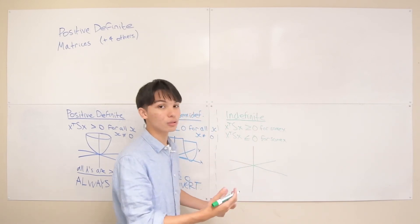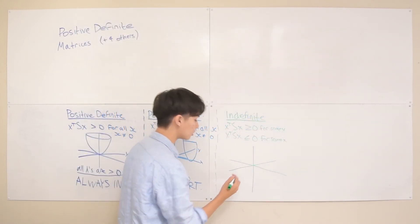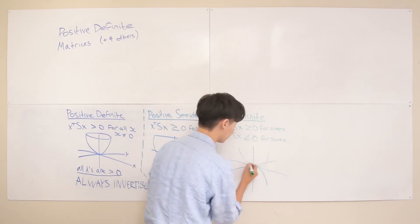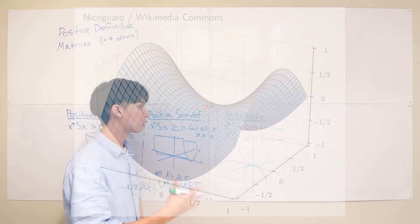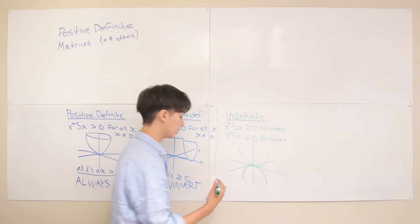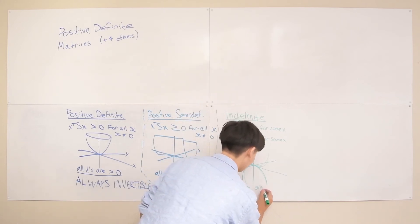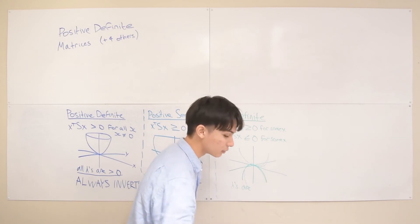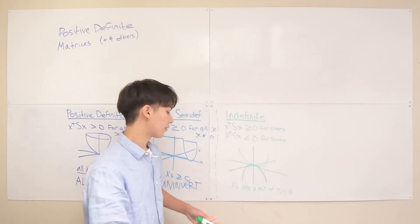This gives you what's called a saddle shape centered at the origin — with some parts pointing downward and others upward depending on the axis. For eigenvalues, an indefinite matrix has a mix of positive, negative, and zero values.